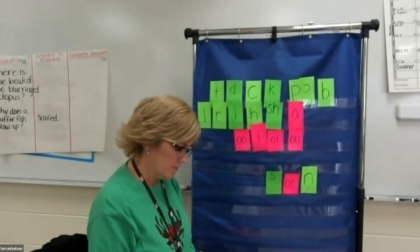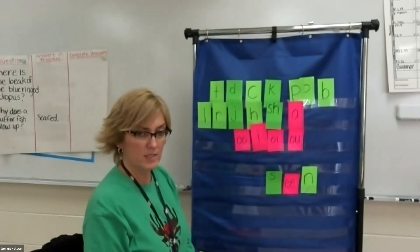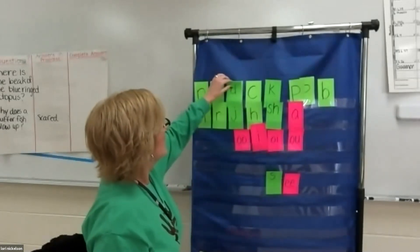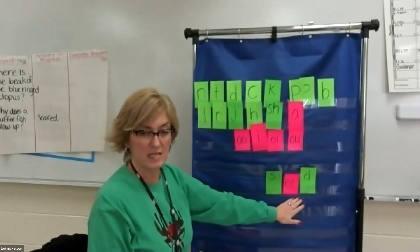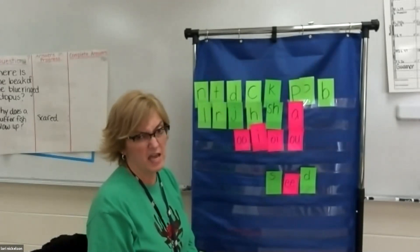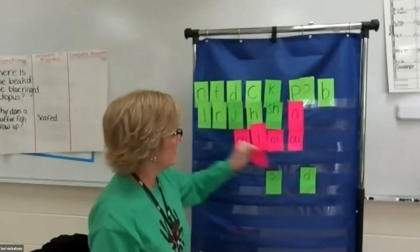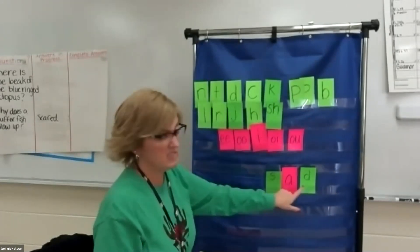Great. What if I wanted to make seen into seed? What do I need to do? Replace the N with what letter? A D. Great job. And now I have seed. Wonderful. Well, what if I wanted to make seed sad? How would I do that? I would replace the double E with the A. And now I have sad.